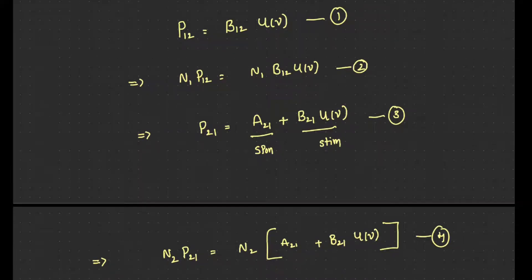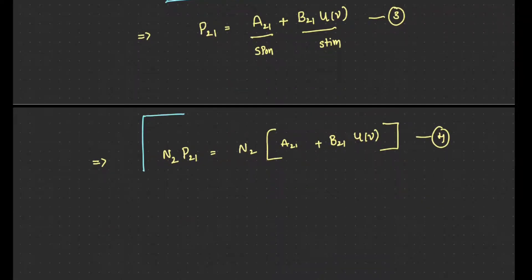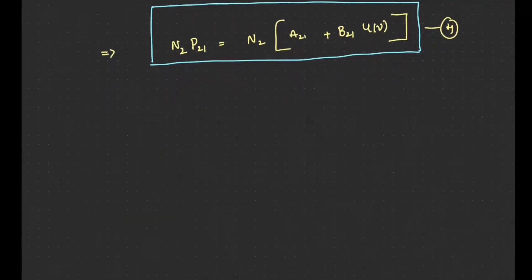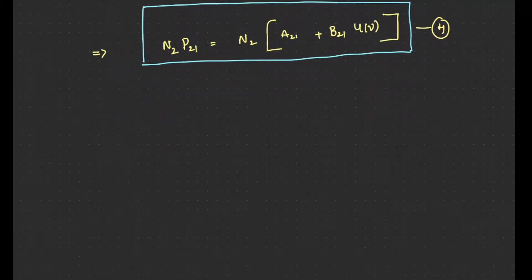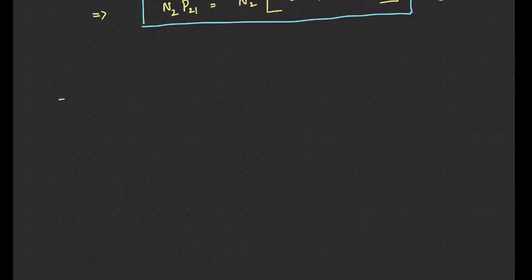Equation 2 represents the total probable rate of transitions from E1 to E2, and equation 4 represents transitions from E2 to E1. Under equilibrium conditions, the total transitions from E1 to E2 must equal those from E2 to E1. So we equate equations 2 and 4: N1·B12·U(ν) = N2·(A21 + B21·U(ν)).